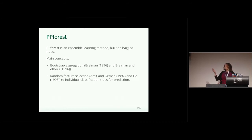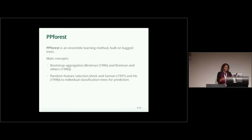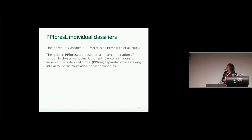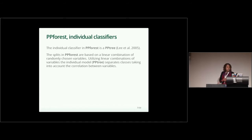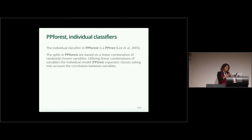There are two main concepts, in the same way as in random forest: bootstrap aggregation and random feature selection. These are the key points that make the forest include randomness, in the same way as in random forest. The individual classifier we are using in our ensemble learning method is a kind of PP tree, which is previous work. The particular thing here is we are using a linear combination of variables in each node partition, and that takes into account the correlation between variables in the forest construction.